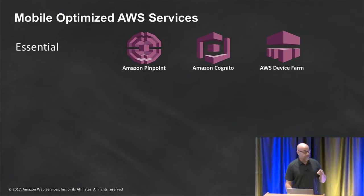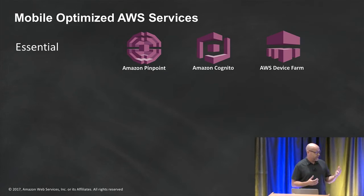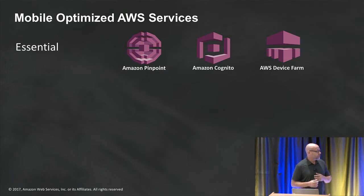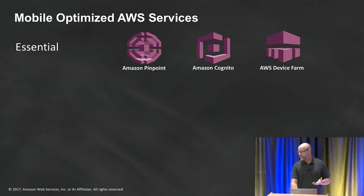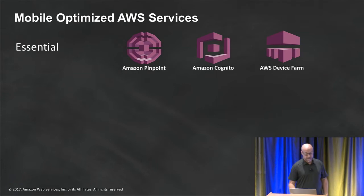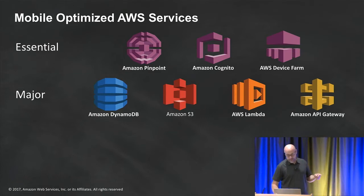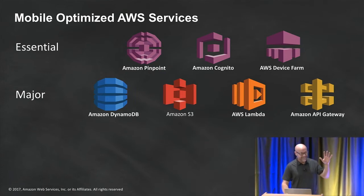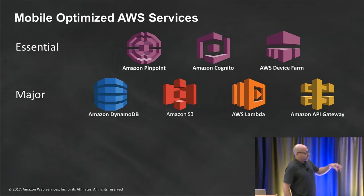AWS Device Farm has real devices in the cloud available for testing when you release your app. You throw the binary on real Android and real iOS devices. There are pools of devices you can choose — like the top 10 or top 20 in use right now. It'll tell you how your app is running on those devices. Really important for games in the app store — you don't want bad reviews from users whose devices can't run the app. Also, Amazon DynamoDB for NoSQL, S3 for storage, Lambda for serverless, and API Gateway — we'll talk about building out a REST API in the next talk.